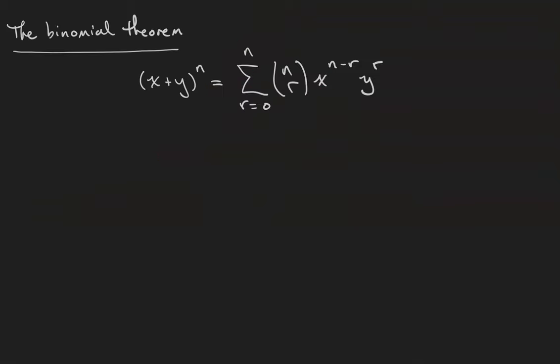All of this can be summed up by the binomial theorem, which says that x plus y to the nth power is the sum of all of the n choose r's times x to the n minus r times y to the r. Because binomial coefficients are symmetric, it really doesn't matter which one's x and which one's y, so long as their powers add up to n.